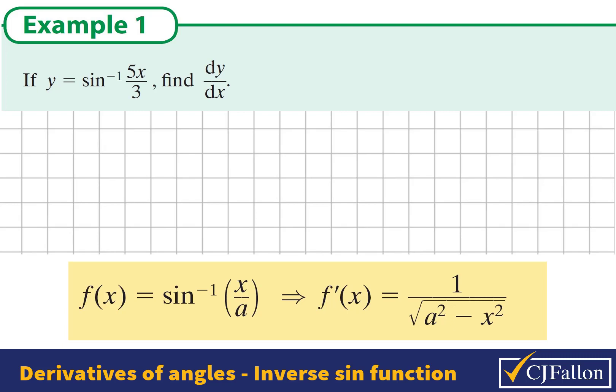We're going to use the chain rule to solve this problem because we have 5x over 3, not x over 3.